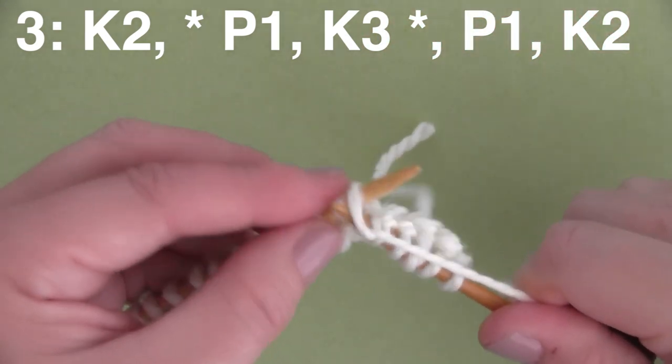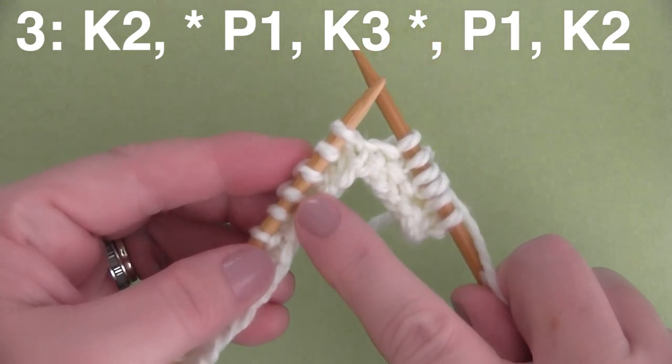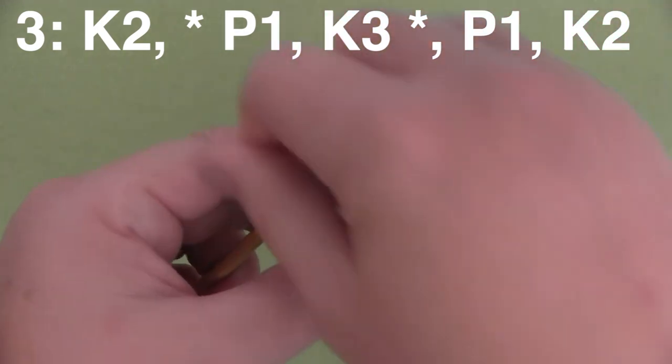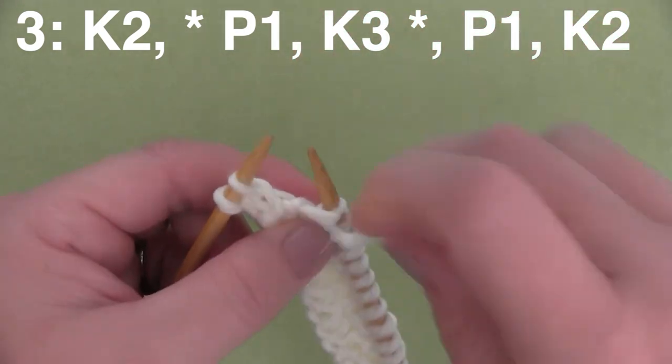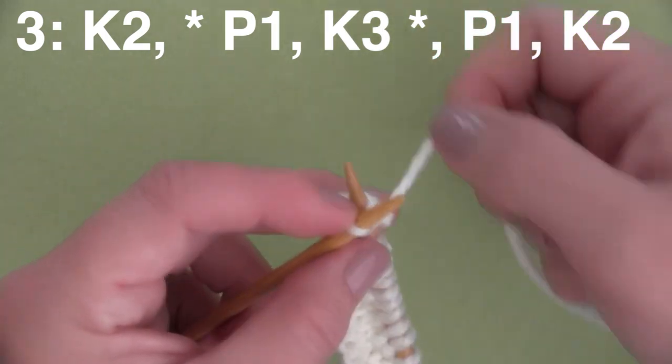Until we have just 3 stitches remaining on our needle. And then we finish it up with P1, purling 1, and knitting 2 stitches here to finish up Row 3.